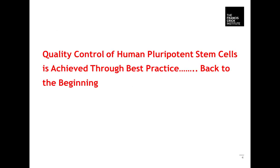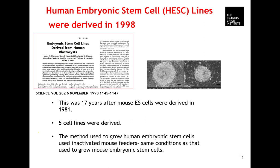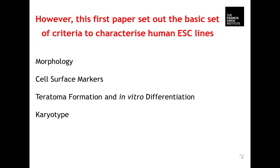Quality control of human pluripotent stem cells is achieved through best practice, and to understand how this evolved, we really need to go back to the beginning. In 1998, human embryonic stem cell lines were derived — 17 years after mouse ES cell lines — and five cell lines were originally derived. They were grown in media containing inactivated mouse feeders, the same media used for mouse embryonic cells. That first paper set out the basic criteria characterizing human embryonic stem cell lines: morphology, cell surface markers, teratoma formation and in vitro differentiation, and — very importantly — karyotype.